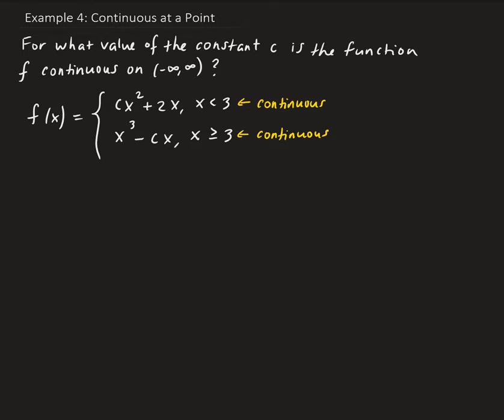What we need to do is find C that makes this continuous over the entire real line. We can do that by using the limit. We want to make sure that the left and right hand limits are equal as X approaches 3.